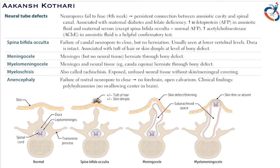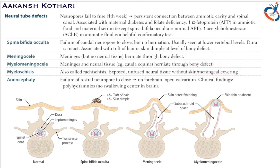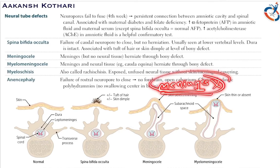Myeloschisis, also called rachischisis, is exposed, unfused neural tissue without skin or meningeal covering. In this condition, the meninges are completely absent.